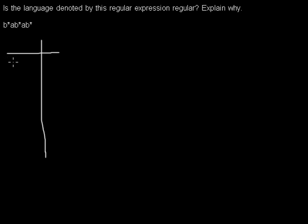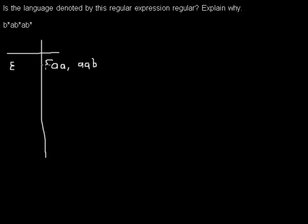Let's think about some words. Let's begin with the empty string. The question is: is the empty string in the language? The answer is no, because the language contains words with exactly two A's and the empty string doesn't have any. So what do I have to append to the empty string to get a word in the language? I could append two A's, or two A's and a B, or a B and then two A's, or two B's and two A's, or anything else.